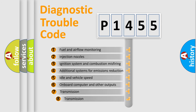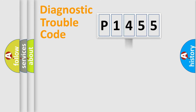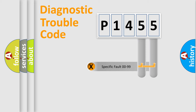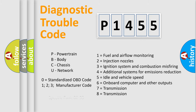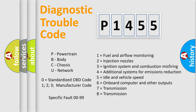The third character specifies a subset of errors. The distribution shown is valid only for the standardized DTC code. Only the last two characters define the specific fault of the group. This division is valid only if the second character code is expressed by the number zero.